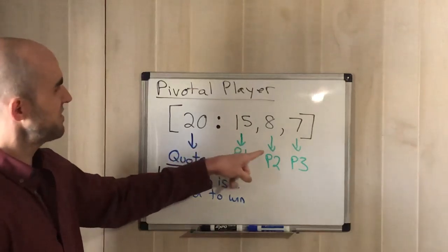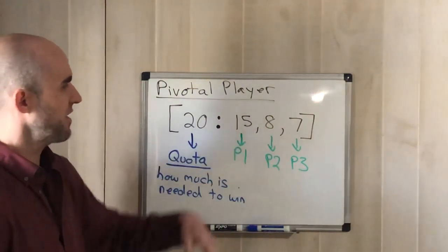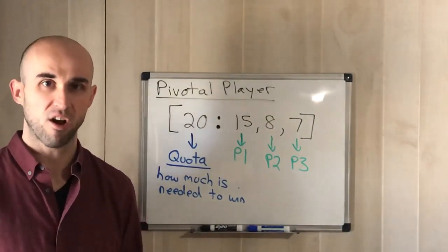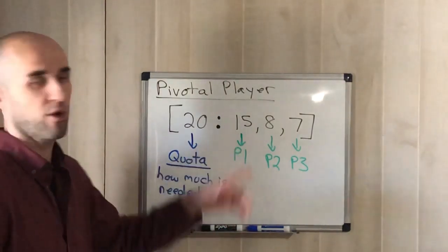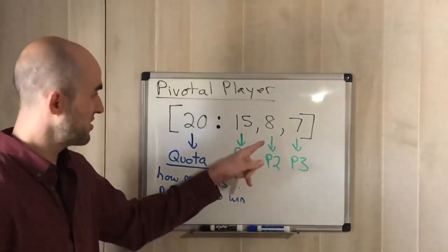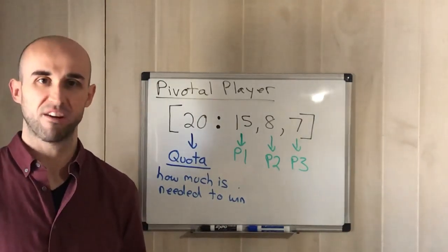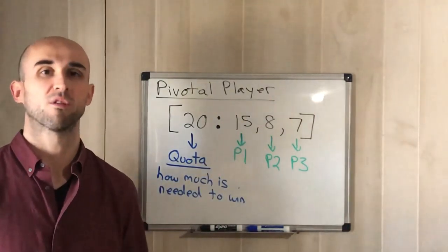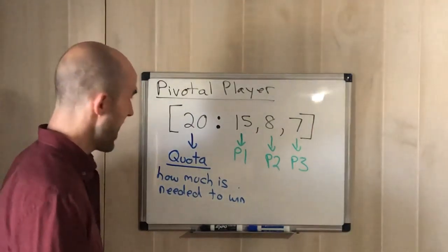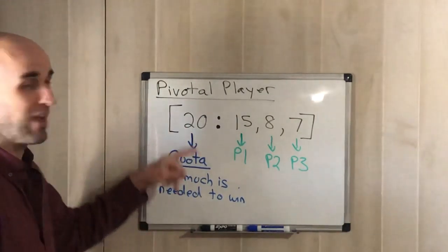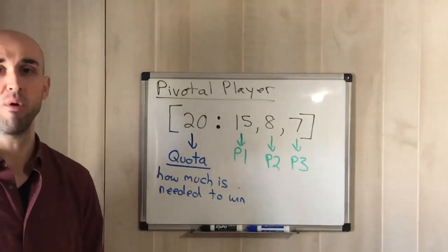The first number represents the quota — how many points are needed to win — and all the others represent the points that each player brings, in order. Player one brings 15, player two brings 8, player three brings 7. The way we calculate pivotal players depends on the order in which they go. If player one goes first you already have 15 points; if player two goes first you only have 8. We need the players to reach 20 points to win.